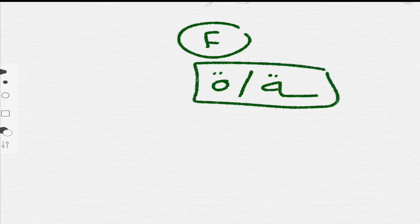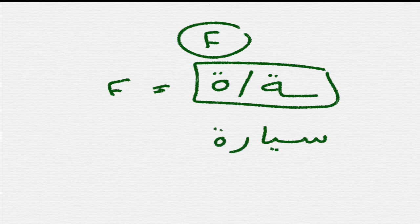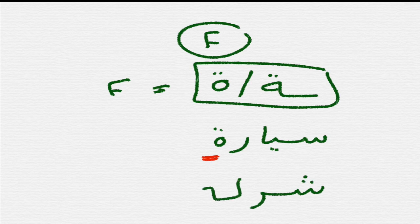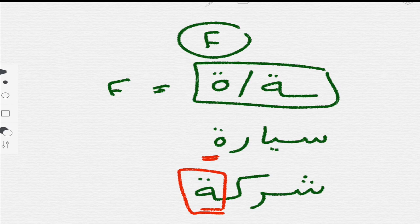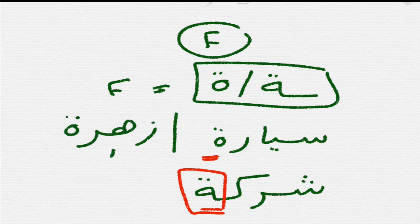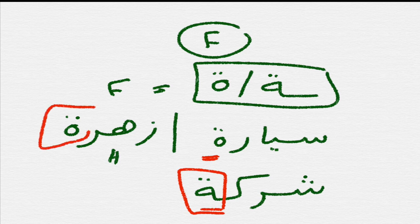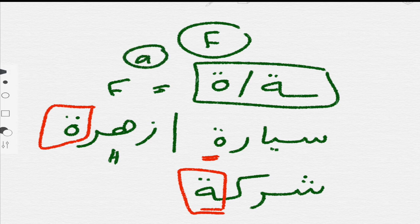Third, and most important: in Arabic, any noun that ends with this character — the ta marbuta (ة) — means the noun is feminine. For example, 'sayyara' means car, and it ends with this character, so it's feminine. Another word, 'sharika,' means company — it ends with this character, so it's feminine. Also 'zahra' ends with this case, meaning it's feminine. This ending is always pronounced 'ah,' though in some cases it can sound slightly different.